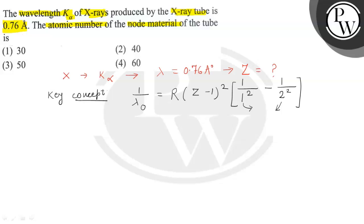Now when we substitute the values, because lambda is given in the question as 0.76 angstrom, this is 0.76 multiplied by 10 to the power minus 10 meter. R is Rydberg's constant, its value is 1.09 multiplied by 10 to the power 7.